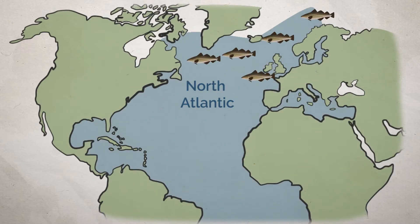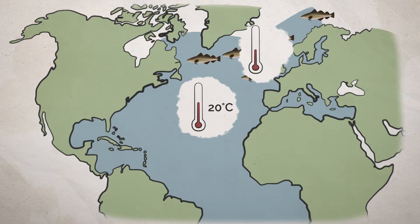Cod are found throughout the North Atlantic, a habitat that provides highly variable environmental conditions. In the southern part, cod thrive in temperatures around 20 degrees Celsius, while in northern parts, they live and graze in water below zero degrees.